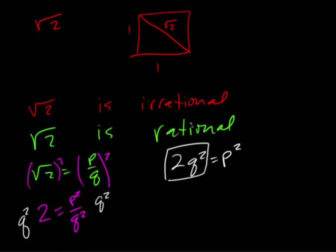And so p can be written as 2k where k is some integer. Now if we plug it in right here we're going to get 2k quantity squared equals 2q squared, and if we square that...